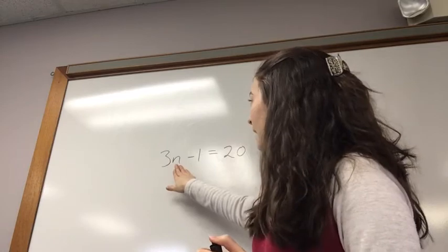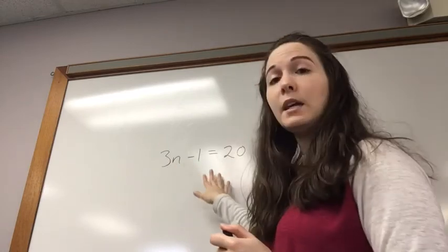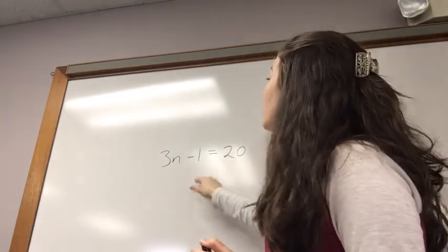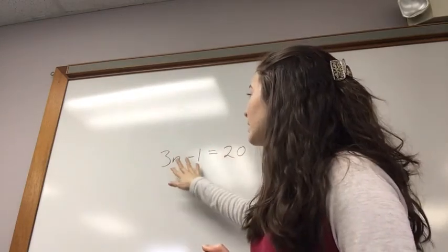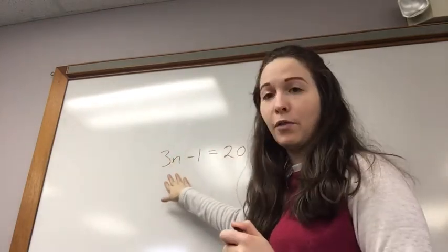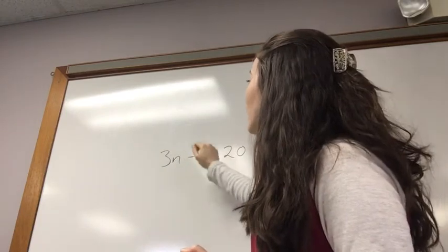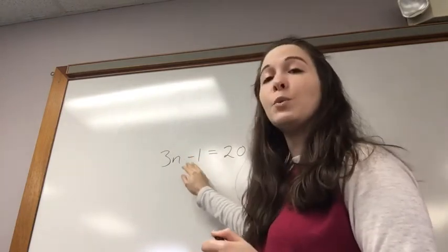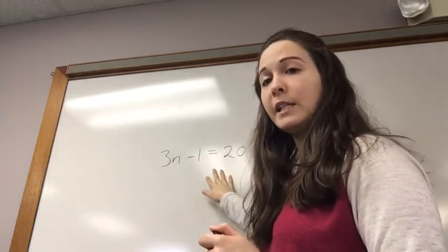So, 3n minus 1 equals 20. To get 20, we're subtracting 1 from the product of 3n. To get rid of the 1, we're going to add 1 to both sides of our equation.